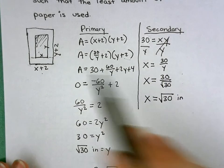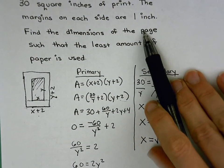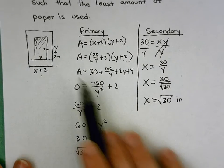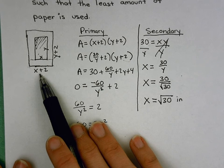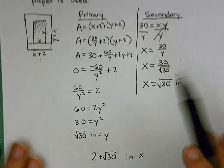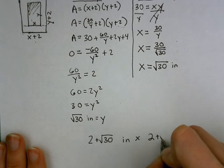But again, that's not the dimension of the page. We want the dimension of the page. That's just my X. X is just the printed region. And so now I'm going to add 2 to my X to get the dimension of the page. And so again, this is another 2 plus root 30.